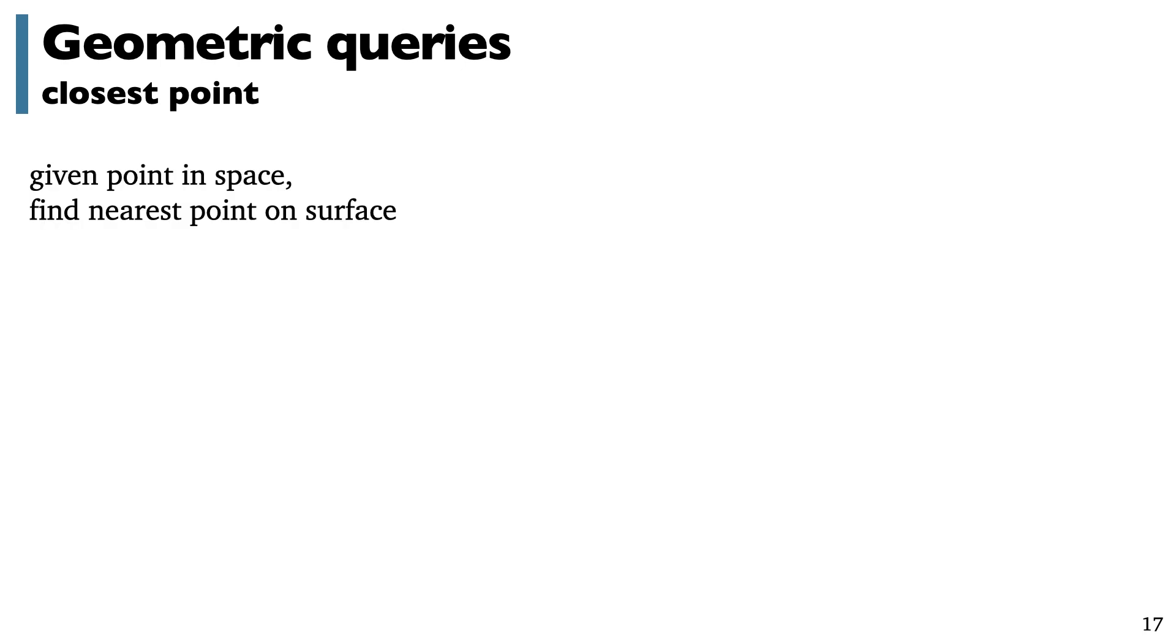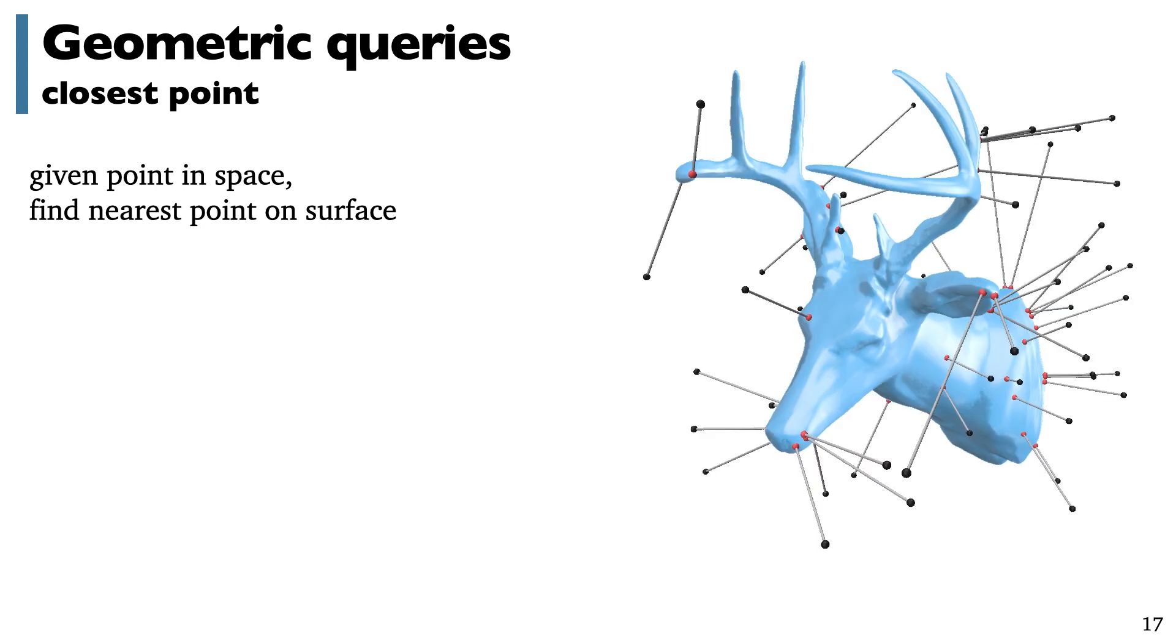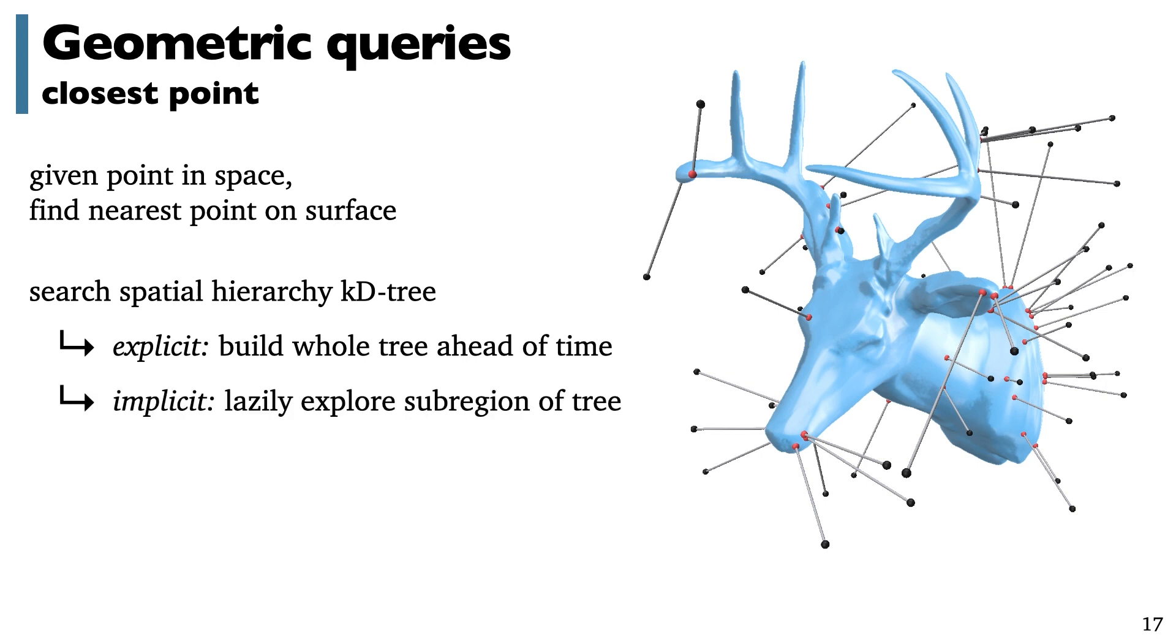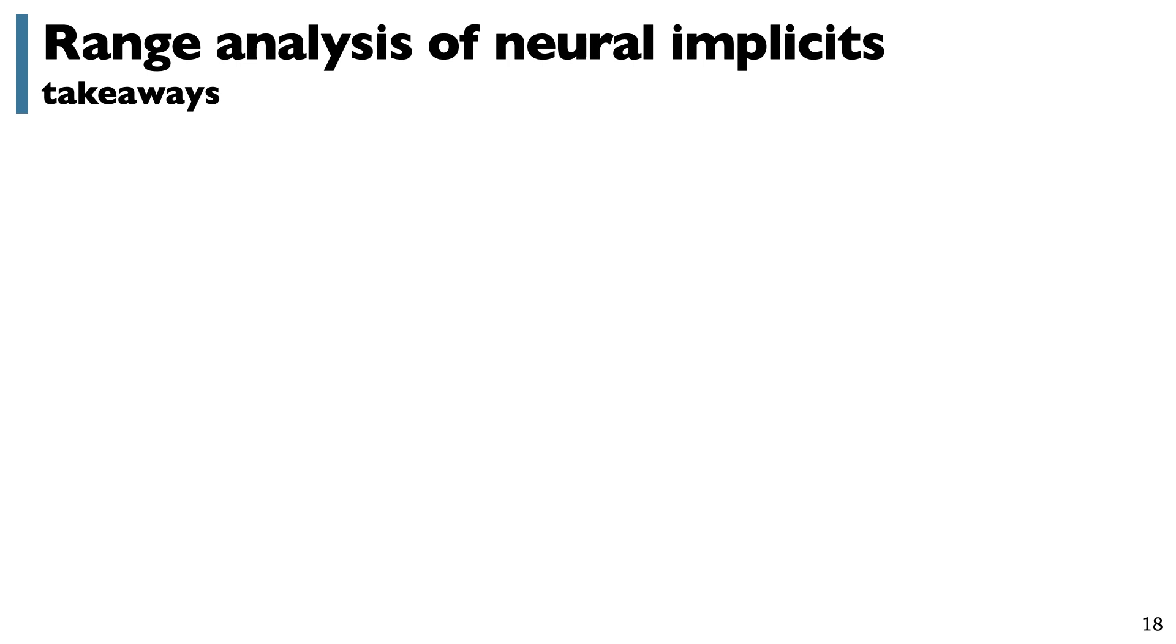And one more of these, we can use the KD tree to perform closest point queries, where here on the right each black point is a query point in space and the red point is the corresponding nearest point on the neural implicit level set found by searching the spatial KD tree. We can do this either explicitly, building the whole tree ahead of time, or implicitly by lazily constructing only the subset of the tree we need.